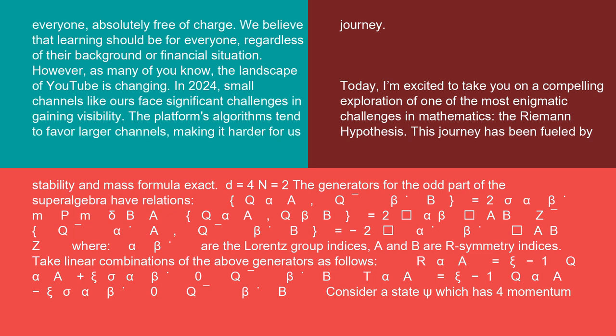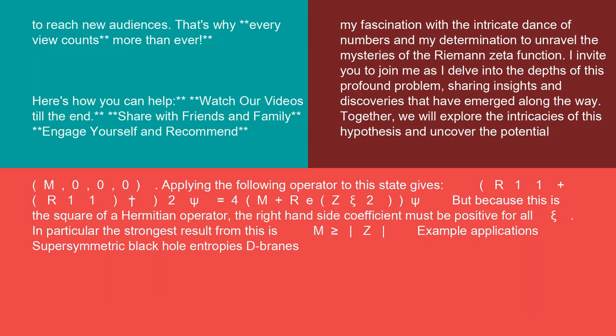Take linear combinations of the above generators as follows: R_alpha a = xi^n Q_alpha a + xi (sigma^mu)_alpha_beta (delta^n) Q^beta b. Consider a state psi which has four-momentum (m, 0, 0, 0).